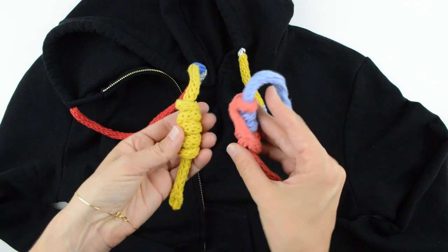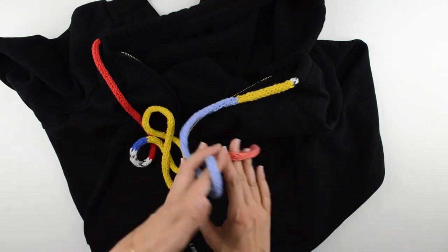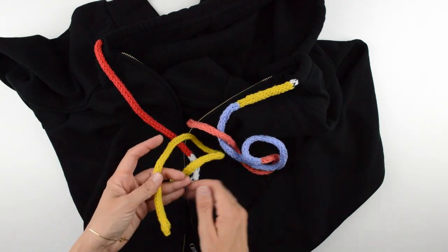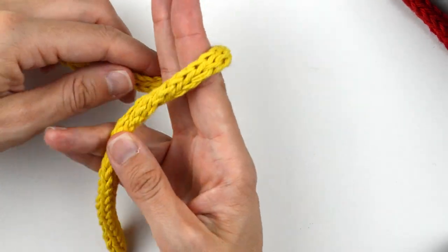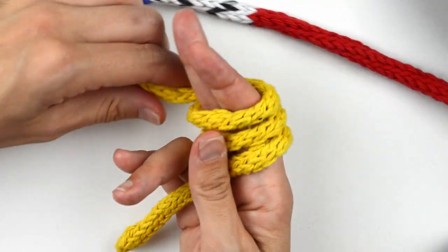If you'd like to make barrel knots on the end, be sure to crochet your cord a bit longer. Each of my knots used about 14 inches or about 35 and a half centimeters of cord. Leave a couple inches or so for a tail. Wrap the cord around two fingers as many times as you like. I did five.